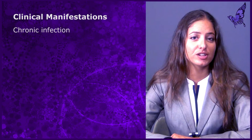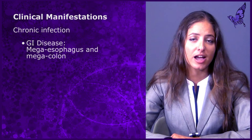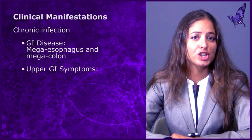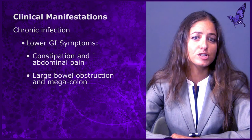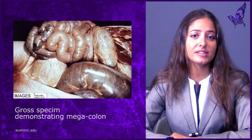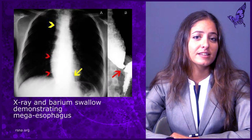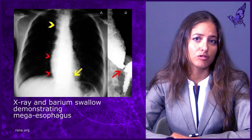Chronic infection with Chagas disease may also lead to GI involvement of both the upper and lower tracts in approximately 10 to 15% of patients. Upper GI disease typically presents with esophagitis and megaesophagus, resulting in regurgitation and dysphagia, while lower GI disease may cause large bowel obstruction and megacolon with constipation and abdominal pain. This image depicts a gross specimen of megacolon. This next image represents megaesophagus on X-ray and barium swallow. Both megacolon and megaesophagus are seen in Chagas disease.